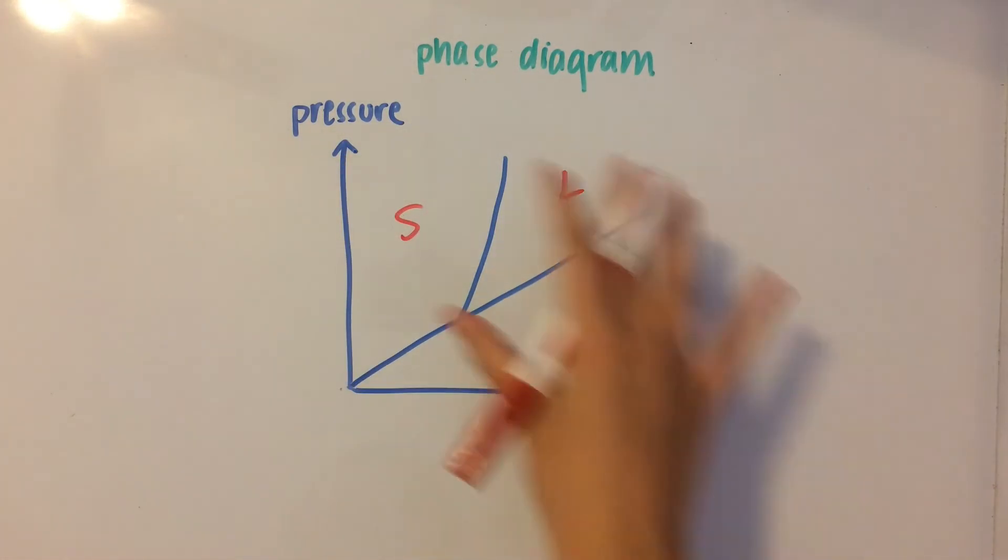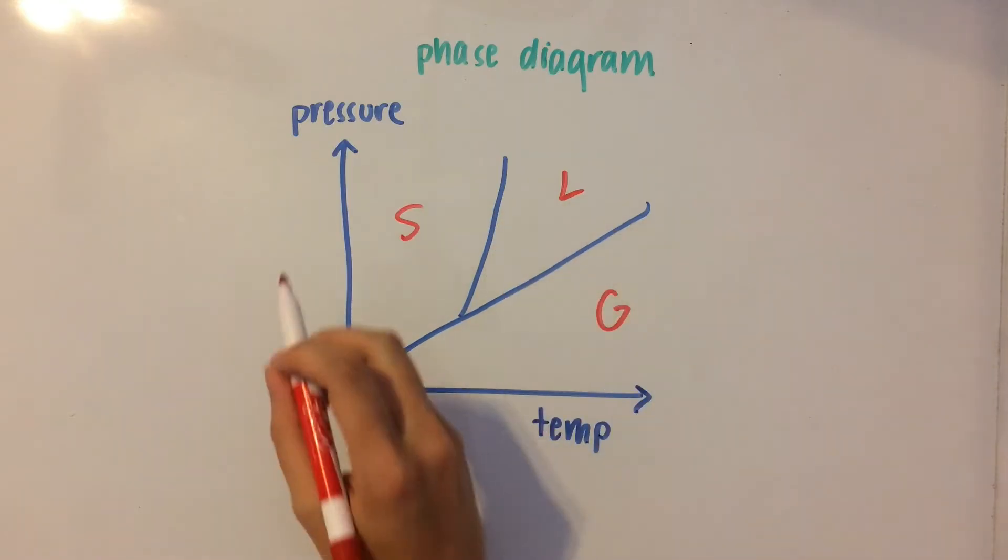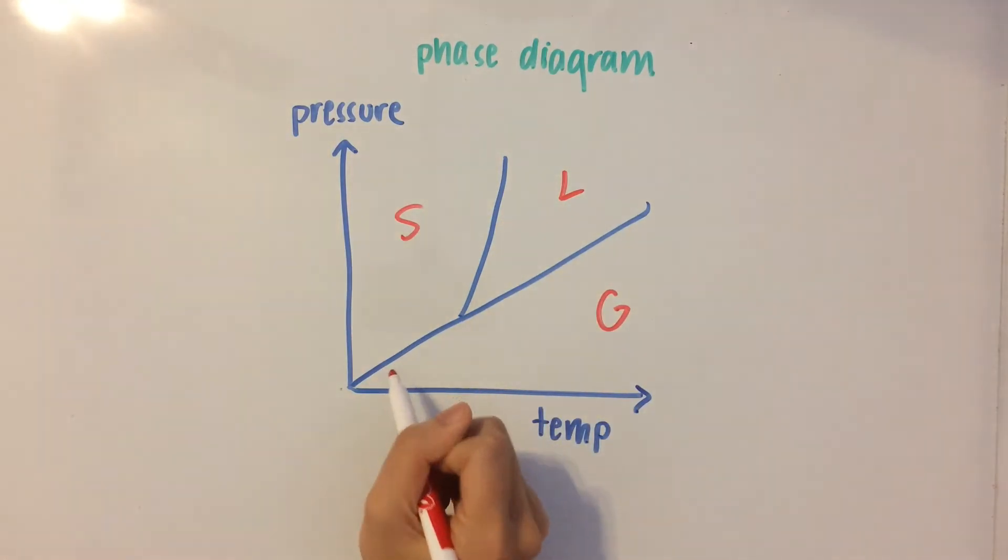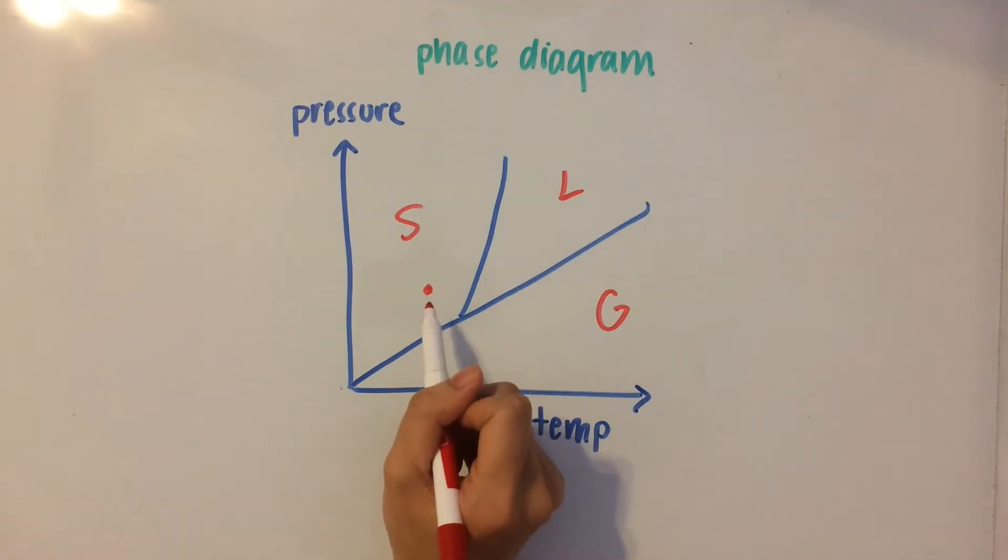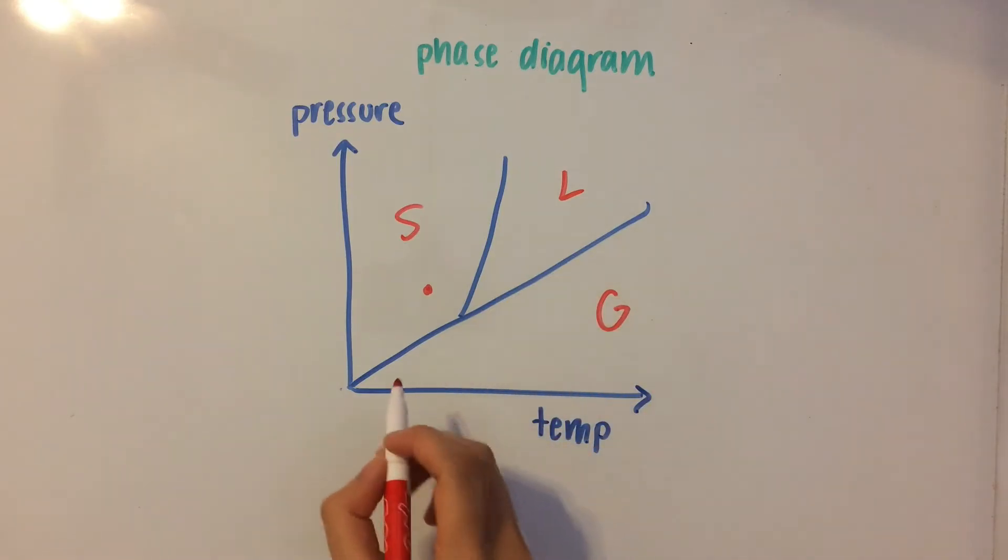So, what you can deduce with a phase diagram is if you have a substance at a given temperature and pressure, so let's say here, and you want to know the melting point of the substance.